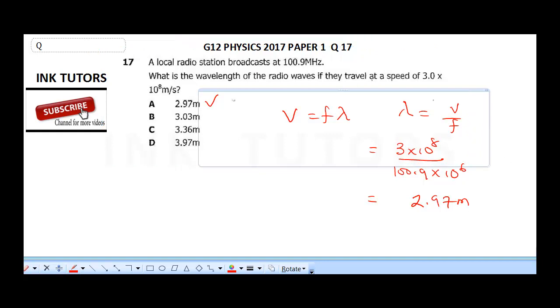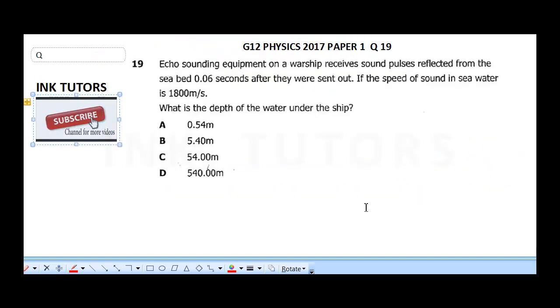The next question says, Echo sounding equipment on a warship receives sound pulses reflected from the seabed 0.06 seconds after they were sent out. If the speed of sound in seawater is 1,800 meter per second, what is the depth of the water under the ship? Now, all you need to do is to know how they calculate the depth of the sea using sound speed.